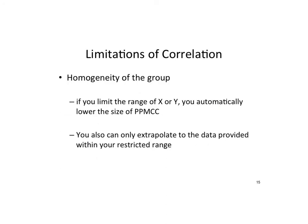The final limitation is called homogeneity of the group, also sometimes called restricted range. Homogeneity — thinking about the prefix 'homo' meaning similar — means the group is very similar. With restricted range, you're going to see a lot of similarity between your x and y variables. If you limit the range of one of those variables, the correlation is going to be influenced and typically lowered. With correlation, you can only extrapolate to the data that you have within your range — you can't expand out.